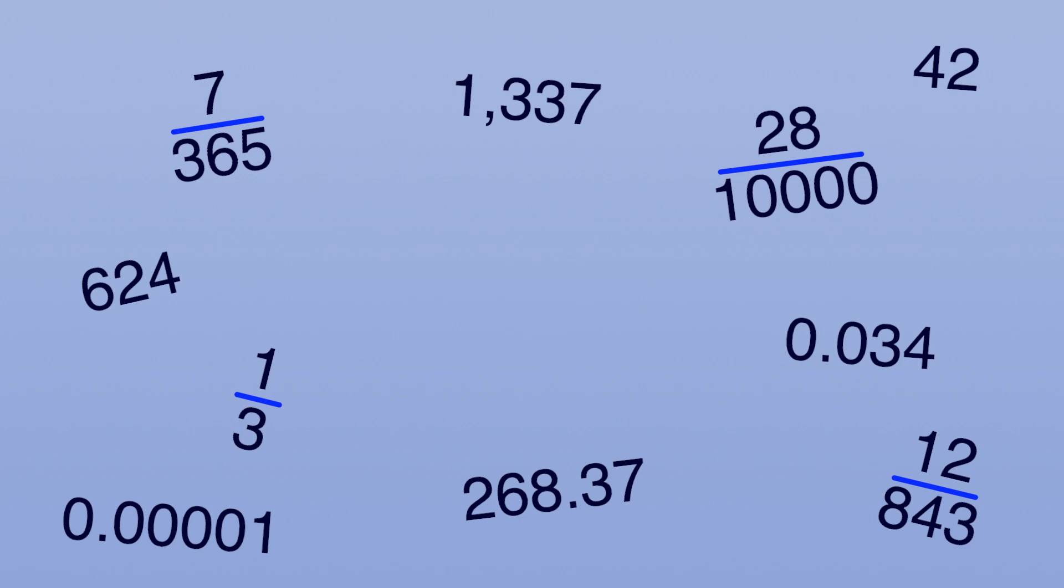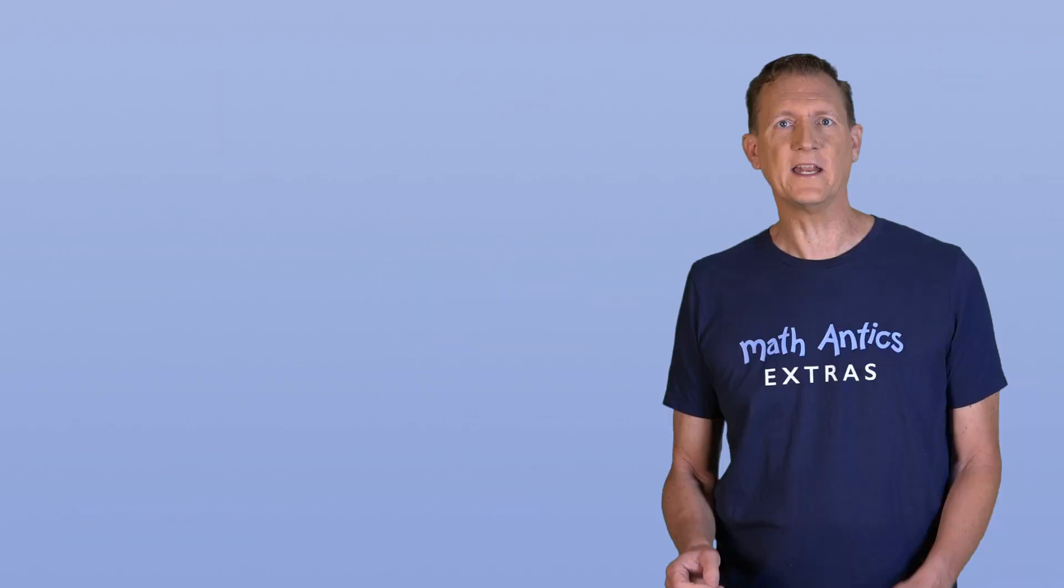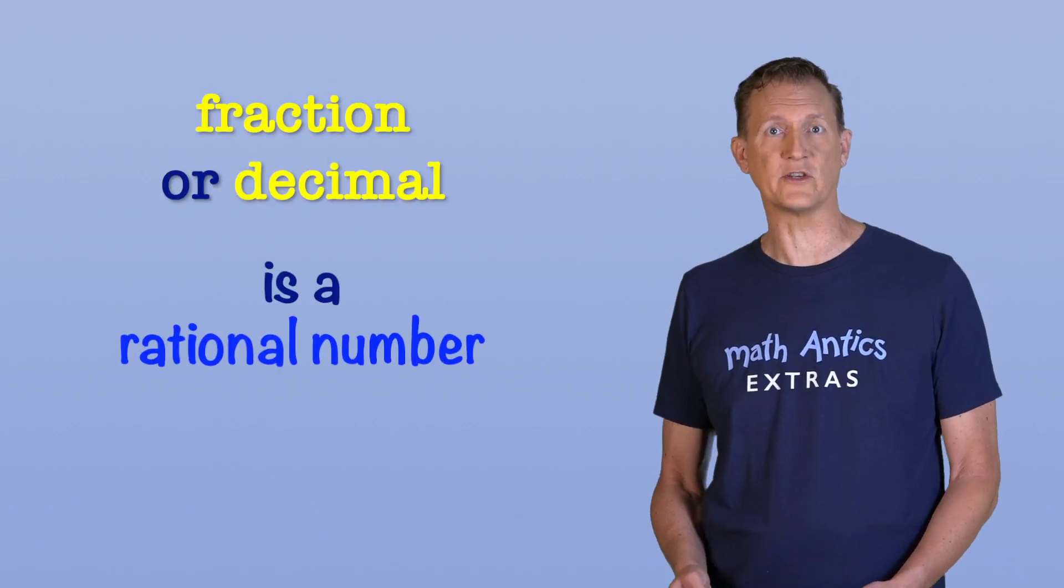So all of these are rational numbers, and there are a lot more. Infinitely more. Any number that can be accurately written as a fraction or a decimal number is a rational number.